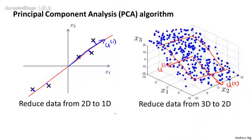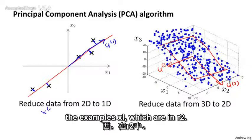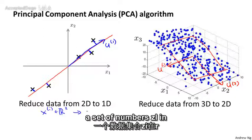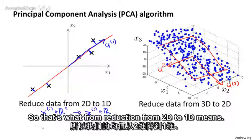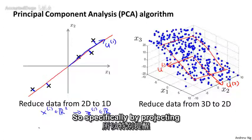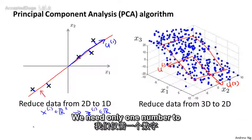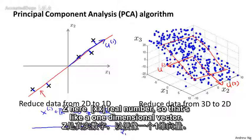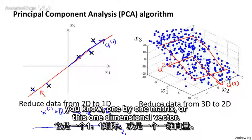As a quick reminder of what reducing the dimension of the data means: for the example on the left, we were given examples xi which are in R², and what we'd like to do is find a set of numbers zi in R to represent our data. That's what reduction from 2D to 1D means. By projecting the data onto this red line, we need only one number to specify the position of a point on the line — I'll call that number z, or z1. Z here is a real number, a one-dimensional vector.